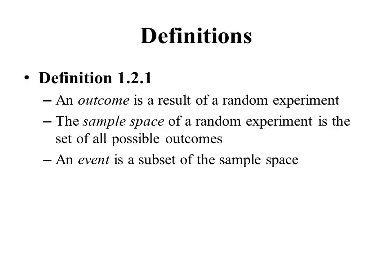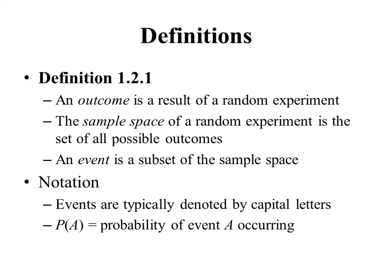We see a lot of words here like set and subset, which indicates that set theory is going to form a foundation for a lot of what we do in probability — and that is the case in the next section. Now, some notation: events are subsets of the sample space and we typically denote them by capital letters, using letters from the first half of the alphabet like A, B, C, D, etc. A symbol like P(A) denotes the probability of event A occurring.